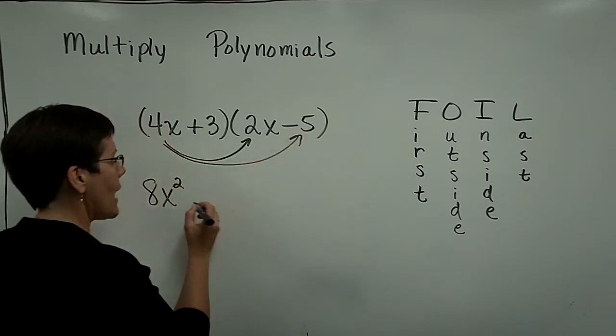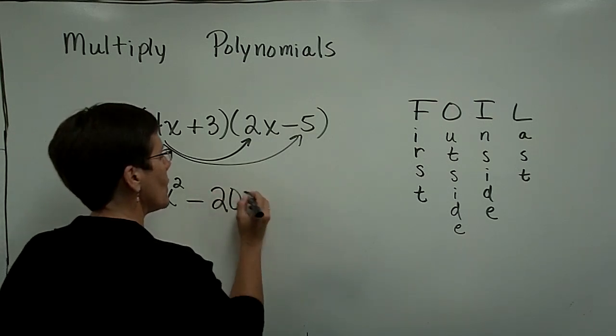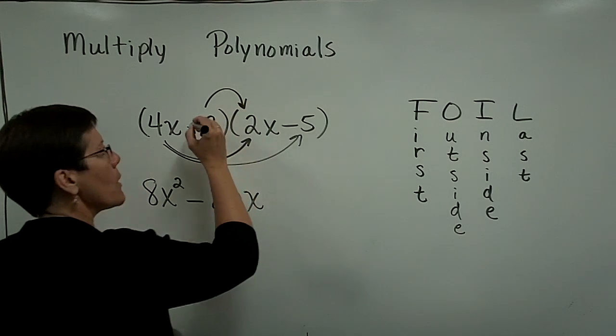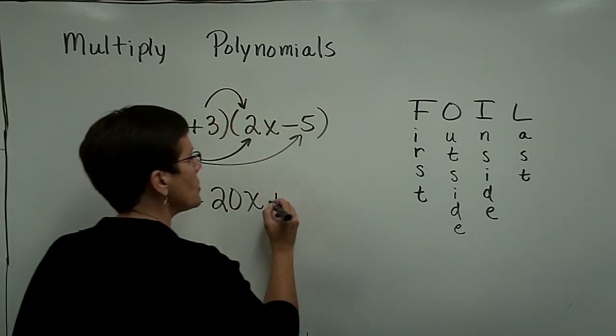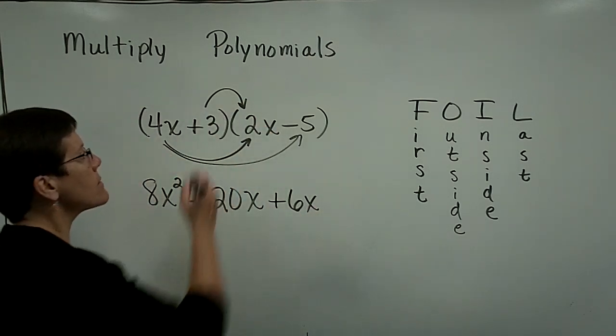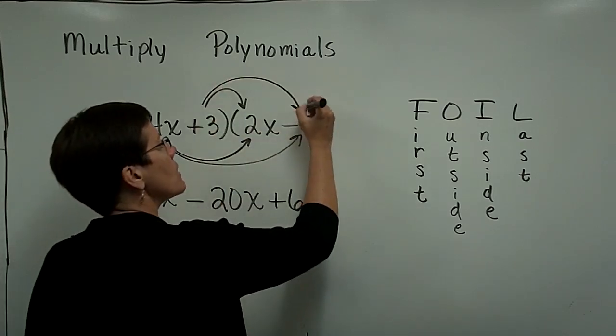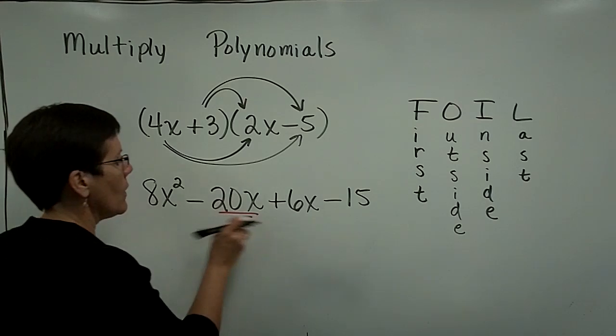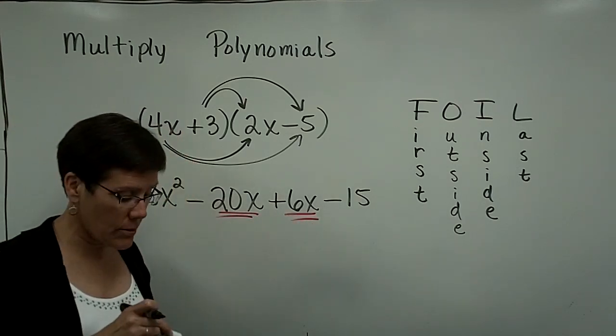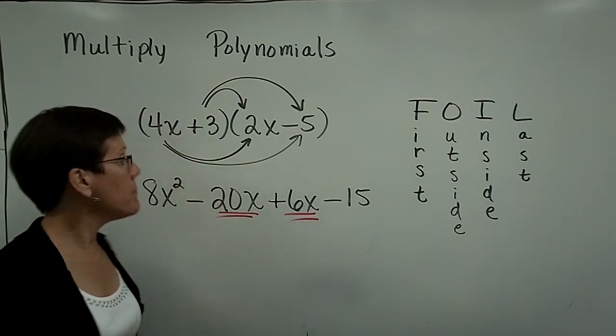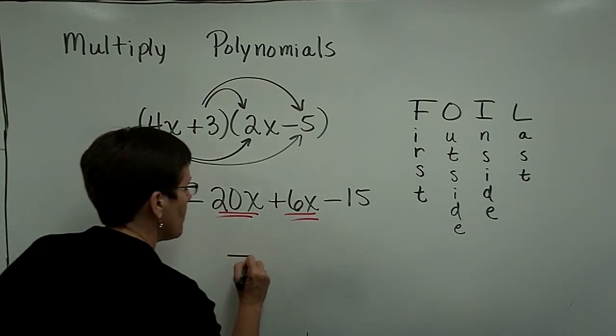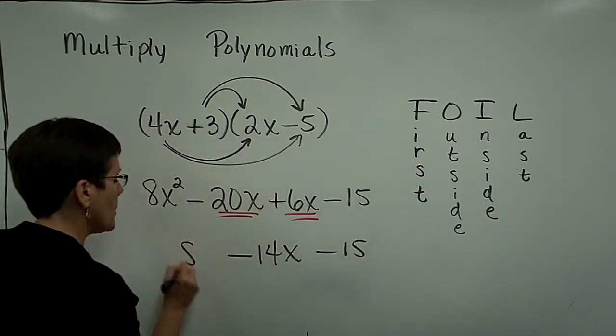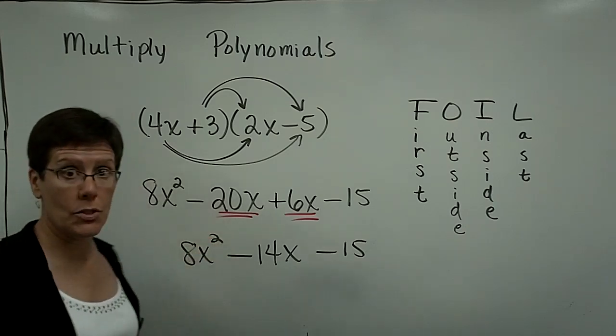4x times a minus 5 is a minus 20x. That's the outside terms. The inner terms are a positive 3 times a positive 2x. That's 6x. And a positive 3 times a minus 5 is a minus 15. And I go ahead and collect those two like terms. A negative 20 plus 6 is a minus 14. And bring everything else. And you have successfully multiplied those two binomials.